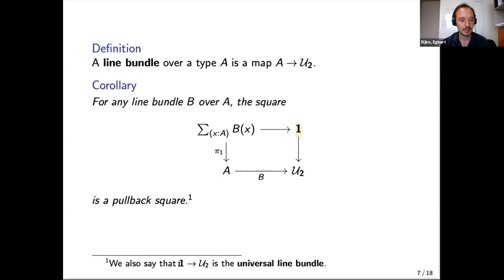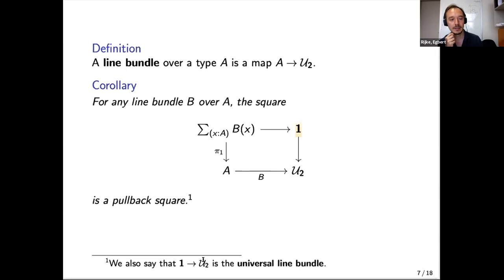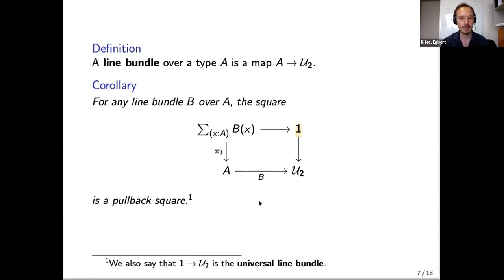There is a footnote that the basepoint inclusion is the universal line bundle. A line bundle over a type assigns a line to every point, and to know the line is to know where the points 1 and −1 go. So a line bundle is really the same thing as a bundle of Booleans—if you don't order your two-element sets, you just get Bool.